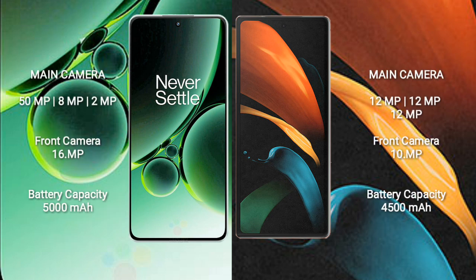OnePlus Nord 3 features a rear triple camera setup: 50MP + 8MP + 2MP, and a front camera of 16MP. Samsung Galaxy Z Fold 2 features a rear triple camera setup: 12MP + 12MP + 12MP, and a front camera of 10MP.